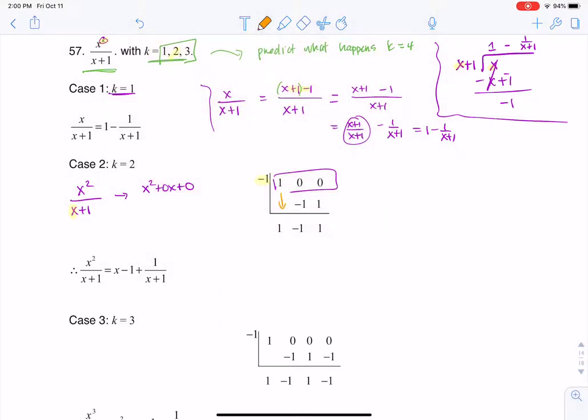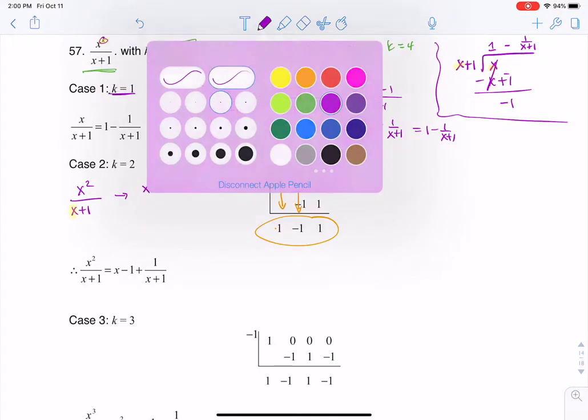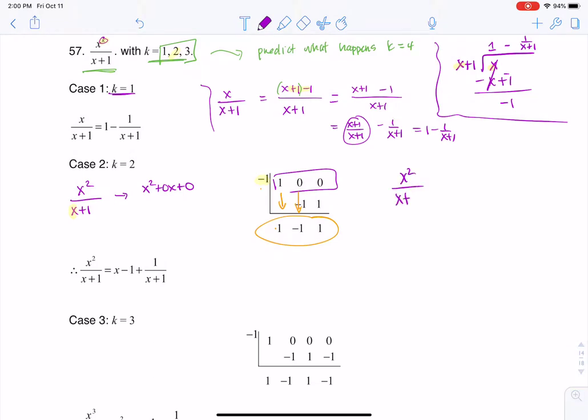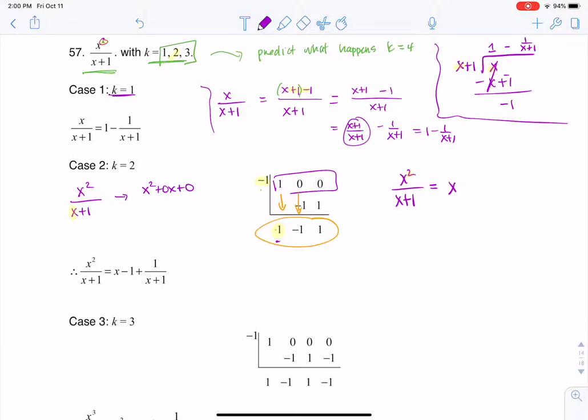And then with synthetic division, right, bring the number down, there's 1, 1 times negative 1, negative 1, add these up, right? And here becomes my work from when I'm doing synthetic division. Well, okay, keep in mind that this quotient here, we were doing x squared over x plus 1. I started with something squared, so that means this coefficient is going to have to do with a first degree term. So this is going to be x, right, from positive 1, and then I'm going to have minus 1 here, and then my remainder was 1 over x plus 1.